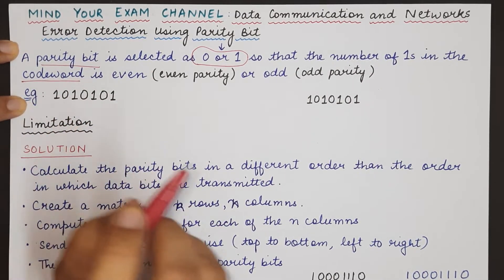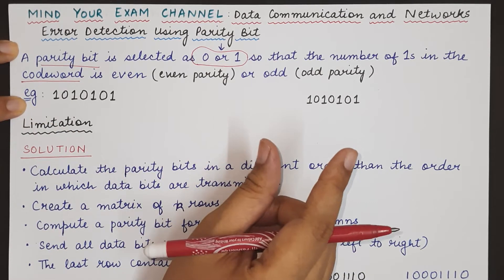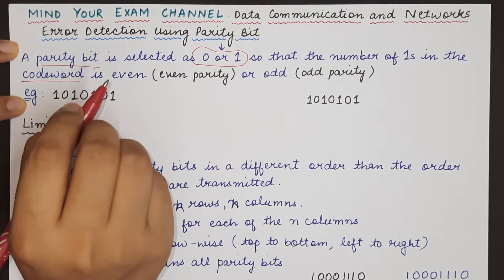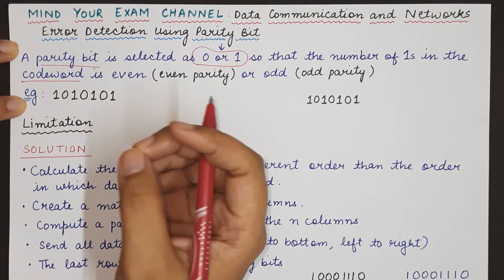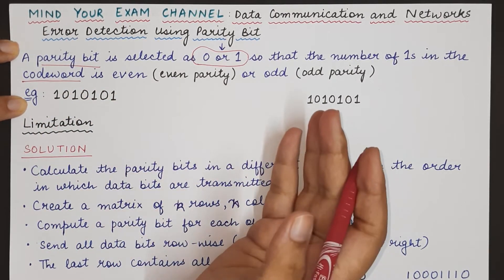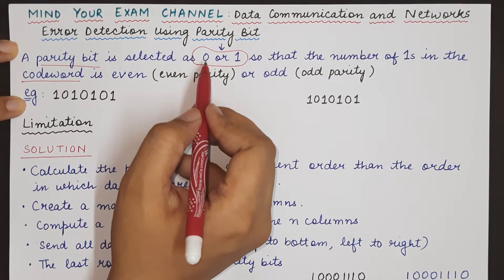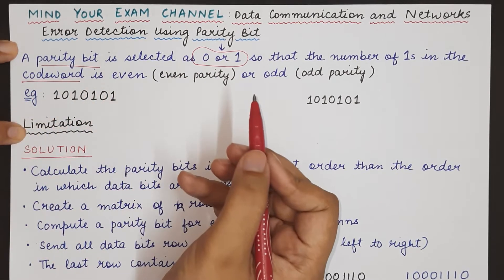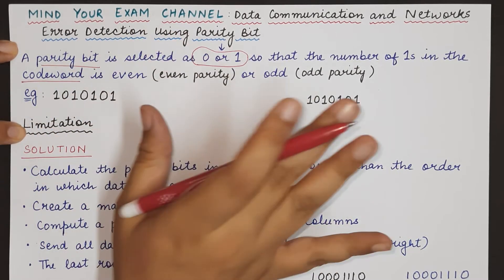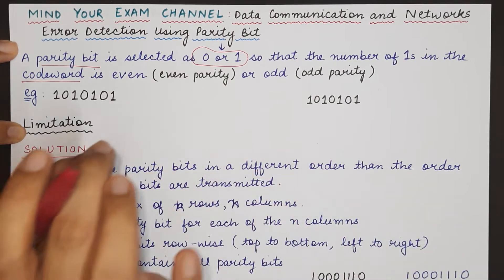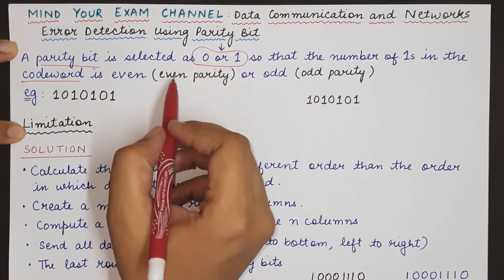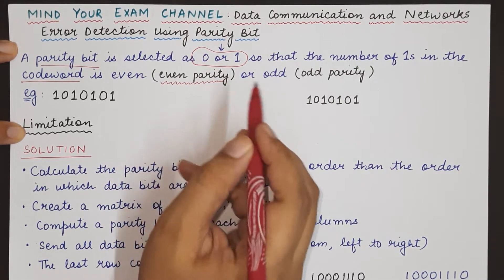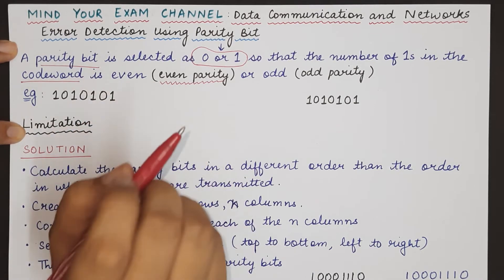One parity bit is calculated for each codeword. If the number of 1s in a codeword is even and we have to make even parity, then the parity bit value will be 0, because the codeword already has an even number of 1s — we do not require any additional 1. Even parity means we want to make the total number of 1s even.